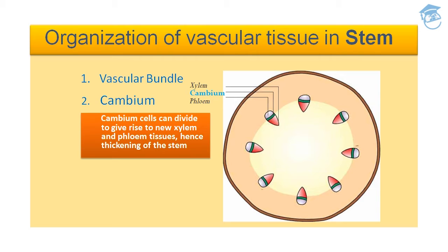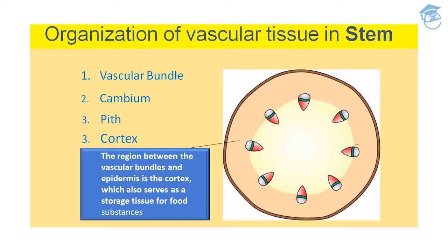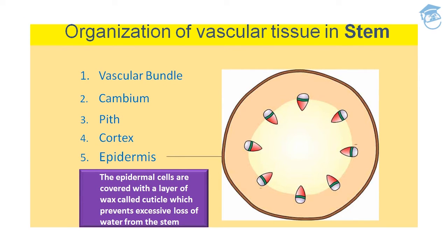Cambium cells can divide to give rise to new xylem and phloem tissue, causing thickening of the stem. Then comes the pith — the vascular bundles are arranged in a ring surrounding a central region called the pith, which serves as storage tissue for food substances. The cortex is the region between the vascular bundle and the epidermis, which also serves as storage tissue. Epidermal cells are covered with a layer of wax called the cuticle, which prevents excessive loss of water from the stem.